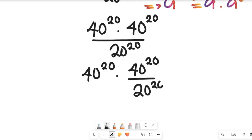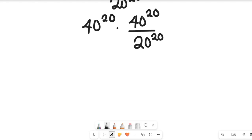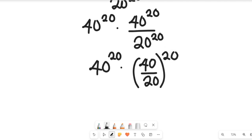I still have not changed anything; I've only simplified that expression. Now the left-hand side can give me 40 to the power of 20 multiplied by—remember the law of indices—this can give me 40 divided by 20 because they have the same power, and this will be all to the power of 20.